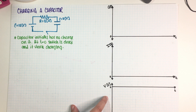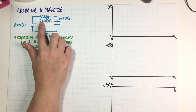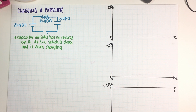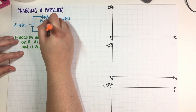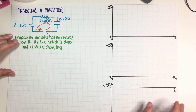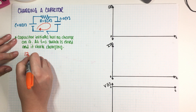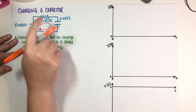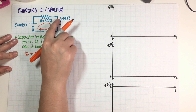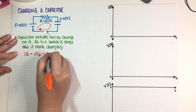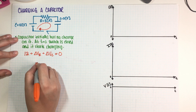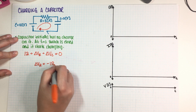The first thing I'm going to do is figure out a loop rule for this circuit, because I will need a loop. So this is my loop rule: 12, because this is my battery, plus the voltage across the resistor, plus the voltage across the capacitor is equal to zero.